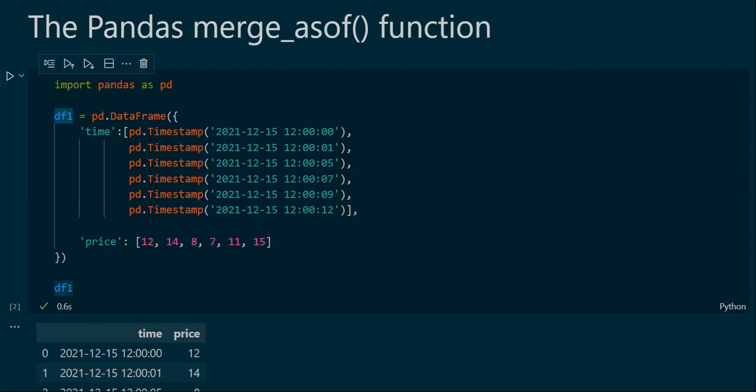Hello and welcome to a new pandas tutorial. In this tutorial we will learn about the pandas merge_asof function. This function performs a merge which is similar to a left join merge, but here we match on near keys instead of equal keys. This makes the function especially useful when working with time series data.